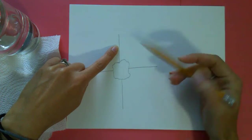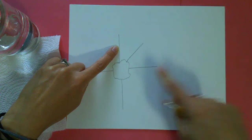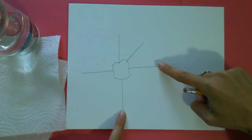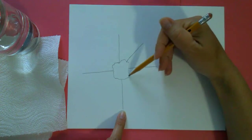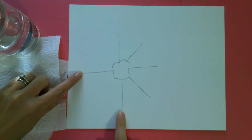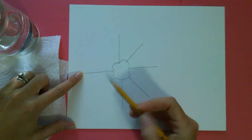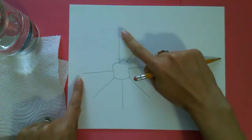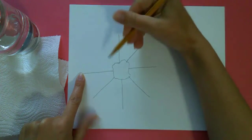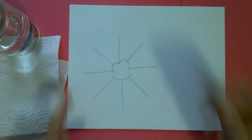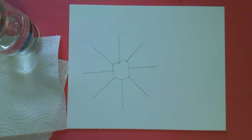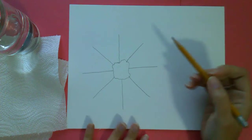All right, now we're going to draw another line in between each of these. So in between these two, draw another line. Now in between these two, draw another line. Now in between these two, draw another line. And now in between these two, draw another line. Now it kind of looks like sunshine, but it's not going to be sunshine. It's going to be a flower.